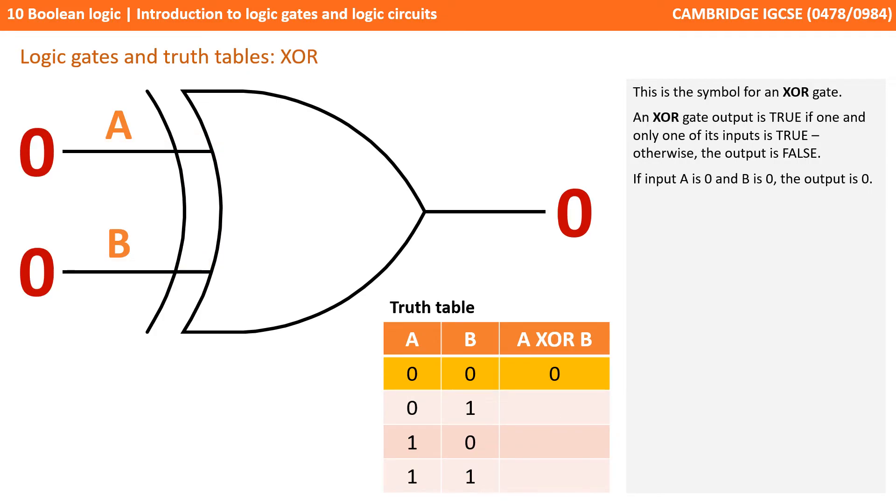Finally we have what's called an XOR gate or an EXCLUSIVE OR. With an EXCLUSIVE OR gate the output is true if one and only one of its inputs are true. Otherwise the output is false. So if A is 0 and B is 0, the output is 0.